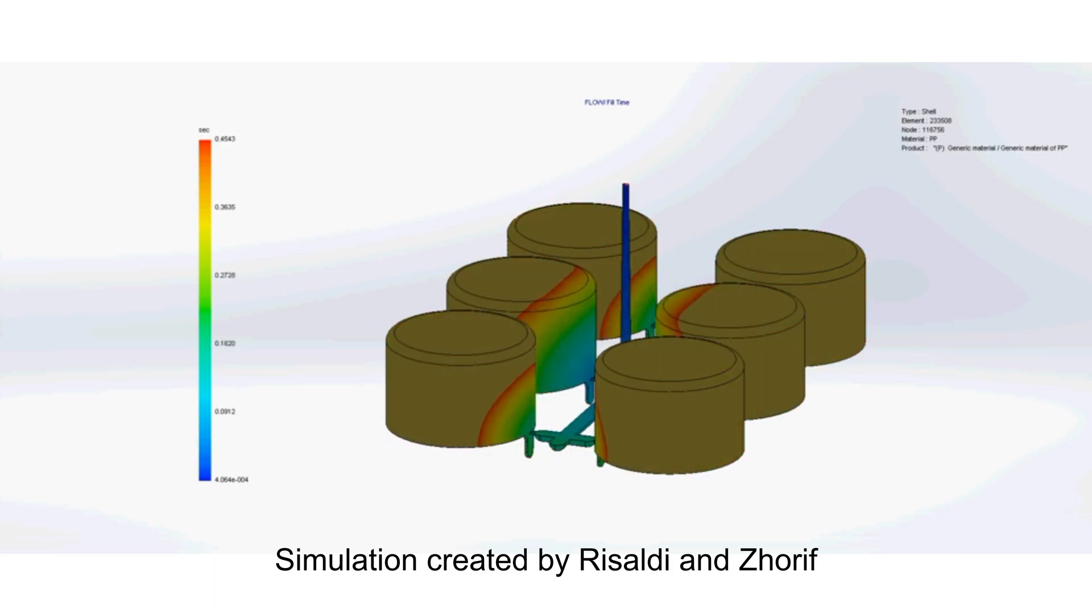In the first simulation, it appears that the two middle cavities are fully filled first. This can cause the resulting product to be different both in shape and mechanical properties.